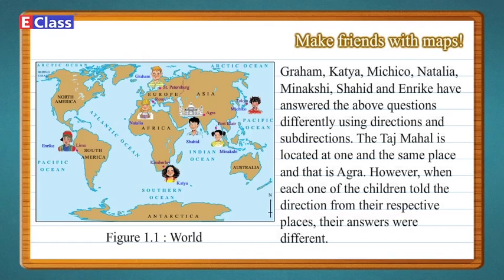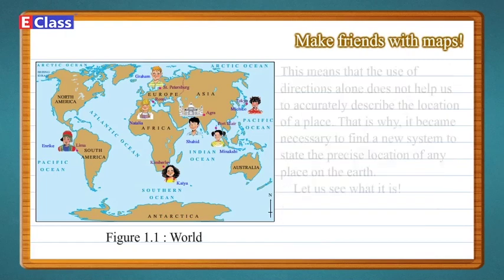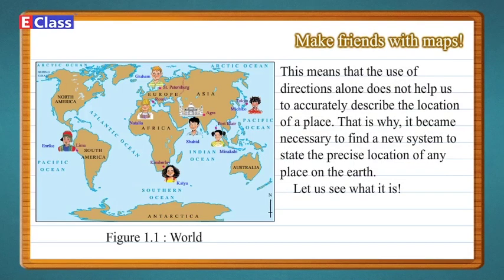Graham, Katya, Michiko, Natalia, Meenakshi, Shahid and Enrique have answered the above questions differently using directions and sub-directions. The Taj Mahal is located at one and the same place, that is Agra. However, when each child told the direction from their respective places, their answers were different. This means that the use of directions alone does not help us to accurately describe the location of a place. That is why it became necessary to find a new system to state the precise location of any place on the earth.